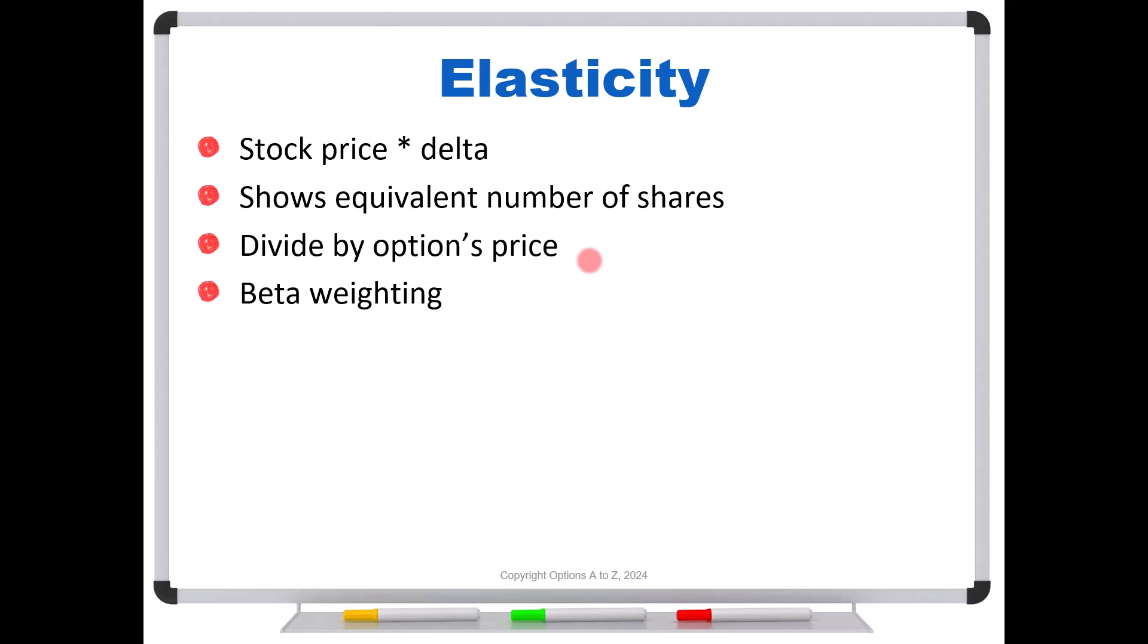So there's a lot of different uses, but it can also just be used on a day-to-day basis and a practical way of saying, how much can I expect my option's price to change? So the formula would look like this. We take the stock price times the delta, and again, that's showing us the share equivalent. How many shares are you controlling right now? And that's what we're going to divide by the option's price.